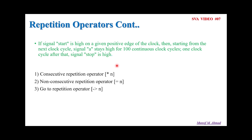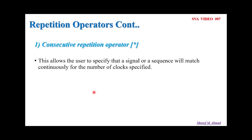So to avoid such a time-consuming task, SVA provides the concept of repetition operators. There are three kinds: consecutive repetition operator, represented by [*n], where n is the number of clock cycles such as 1, 2, 3, 4; non-consecutive repetition operator, represented by the equal-to symbol [=n]; and the goto repetition operator, represented by its own symbol [->n].